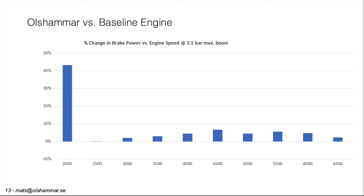This is the power from the Olsammar engine compared to the baseline engine. The optimization gave us a very small turbine orifice for the Olsammar engine, so it spools up very fast and we get a lot more power at 2,000 RPM. The baseline engine spools up at 2,500 RPM. We see that the Olsammar engine is performing better for all other RPMs. At 4,500 RPM we have about 7% better power and at the same time 7% lower fuel consumption for the Olsammar engine.